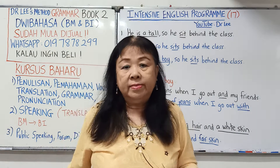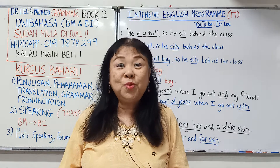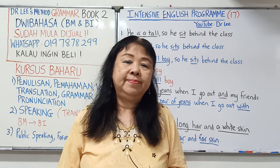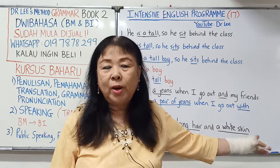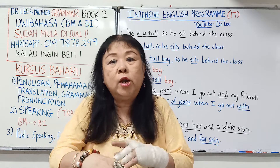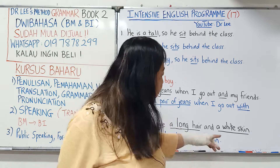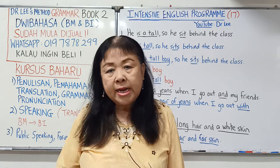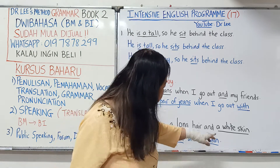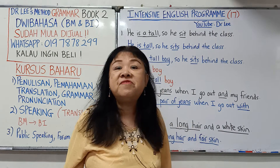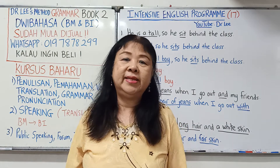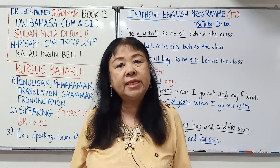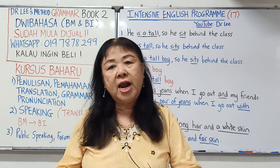Dan 'a white skin' pun salah. Skin tak boleh dikira, jadi jangan gunakan A. Selain itu, 'white skin' bermaksud orang putih — orang Eropah. Orang seperti saya — Cina, Asia — yellow skin. Jadi tidak boleh tulis 'white skin' untuk kulit cerah. Yang A ini salah; yang white ini tukar ke 'fair' — cerah. Jadi 'fair skin.' No white skin, no black skin — untuk orang Afrika kita cakap dark skin.